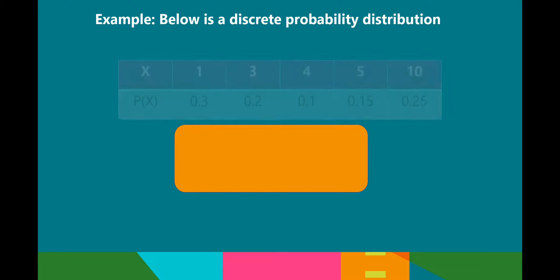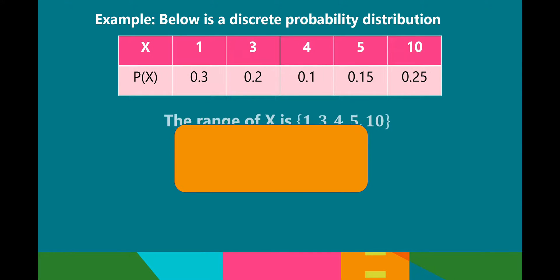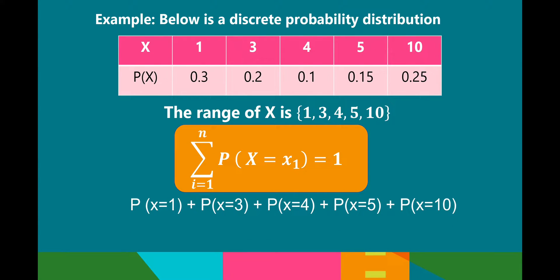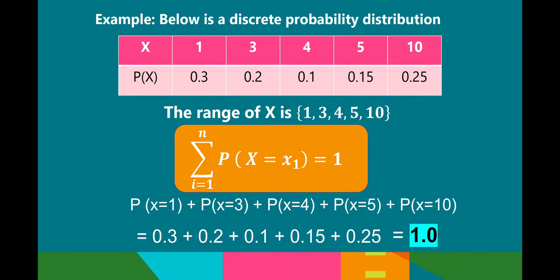Example of discrete probability distribution. The range of x is 1, 3, 4, 5, and 10. Getting the sum of these probabilities: P(x=1) is 0.3, plus P(x=3) is 0.2, plus P(x=4) is 0.1, plus P(x=5) is 0.15, plus P(x=10) is 0.25, and the sum is equal to 1.